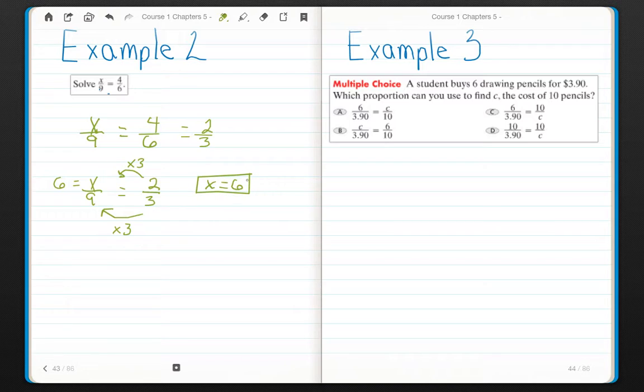Now, that you can probably do mentally. Hey, 4 sixths is 2 thirds. 3 times 3 is 9. So 2 times 3 is 6. X equals 6. But I still want you to set up and show me what you're using as equivalent fractions.